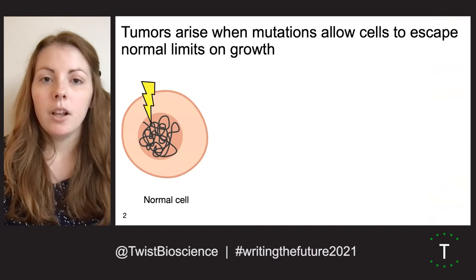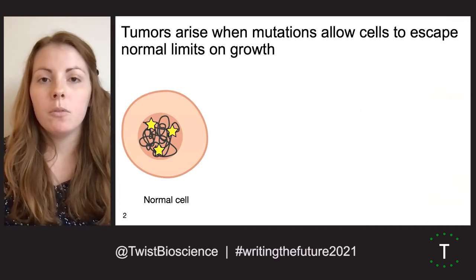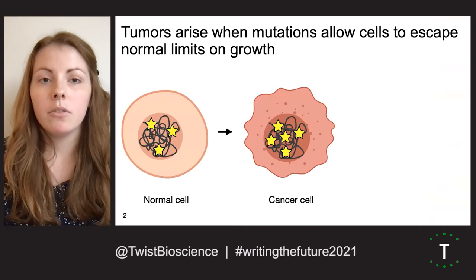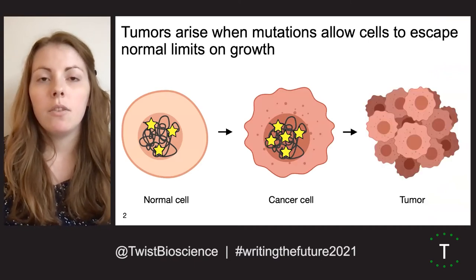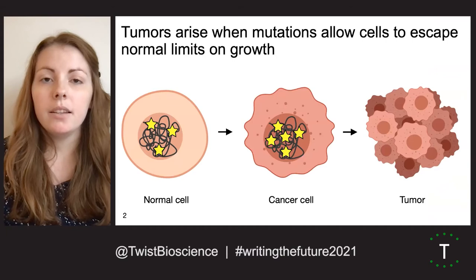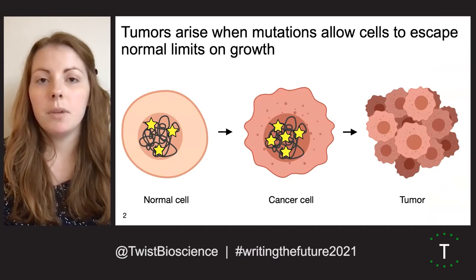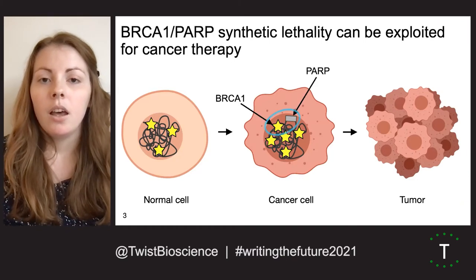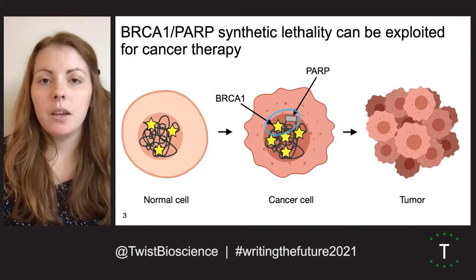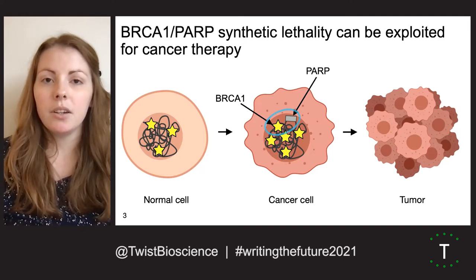Cancer develops as a result of multiple mutations that allow cells to escape normal limits on cell growth, leading to malignant transformation and tumor development. Over the past few decades, advances in genetic analysis technologies have enabled us to begin identifying the mutations driving cancer. One relatively recent therapy exploits the interaction between PARP and BRCA1, which is frequently mutated in breast and ovarian cancer.